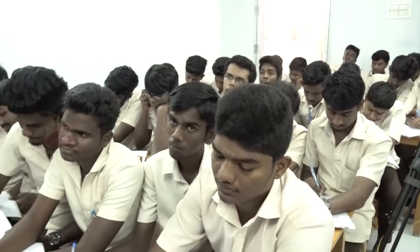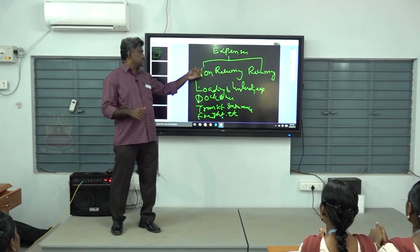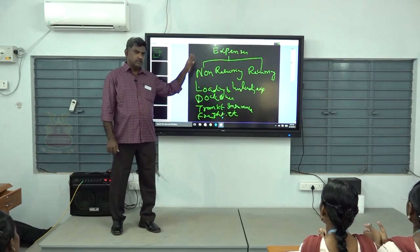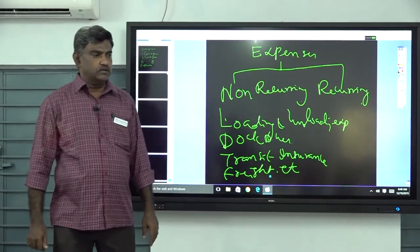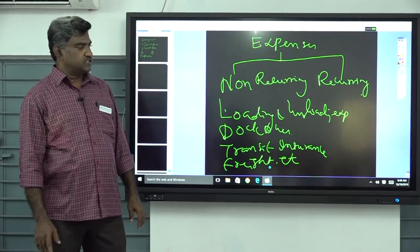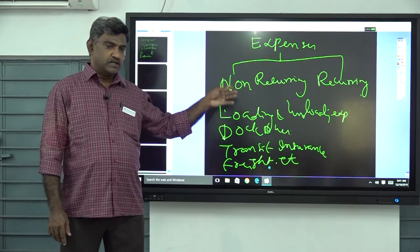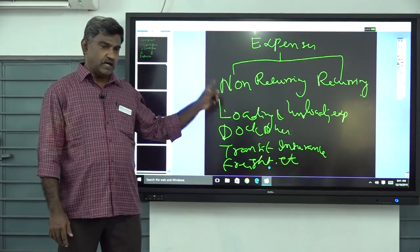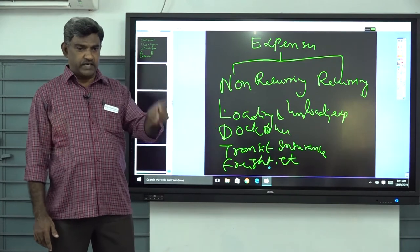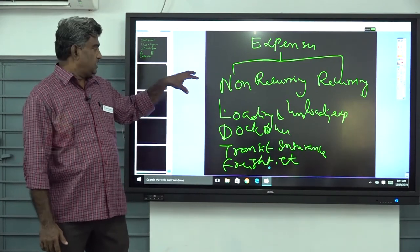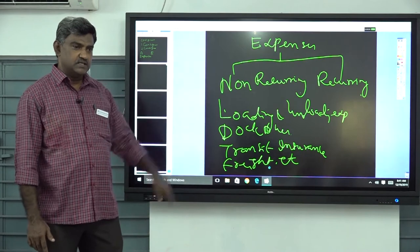Recurring expenses are those expenses incurred in the regular course of consignment. The expenses incurred by the consignee form part of recurring expenses. Examples are godown rent, storage expenses, salesman salaries, and advertisement. The consignee may also spend some non-recurring expenses to bring the goods from the railway station or lorry shed to his trading place, but all consignor expenses are treated as non-recurring expenses.